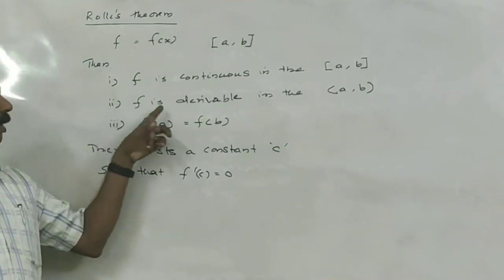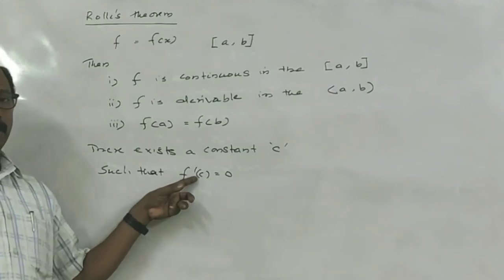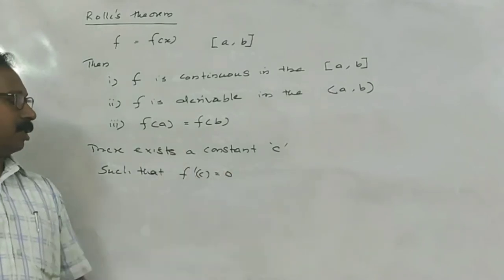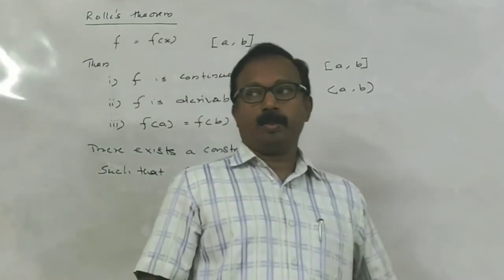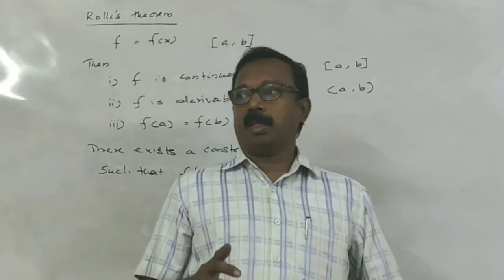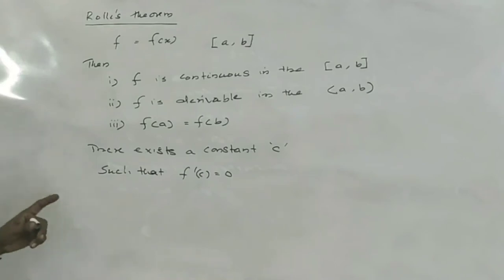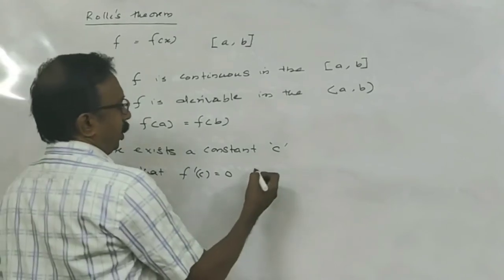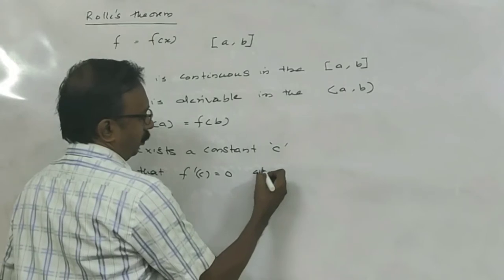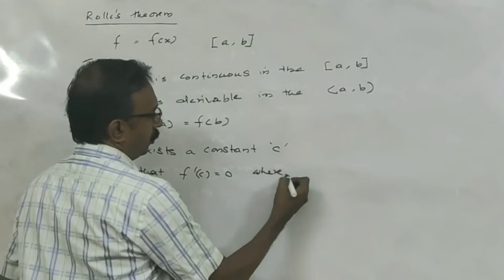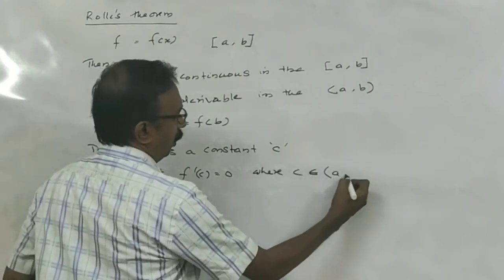If we equate F dash C equal to zero, we get the value of C, and that C lies in between A and B — that is, C lies in the open interval A to B. That is known as Rolle's theorem.